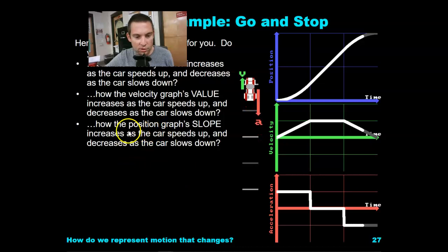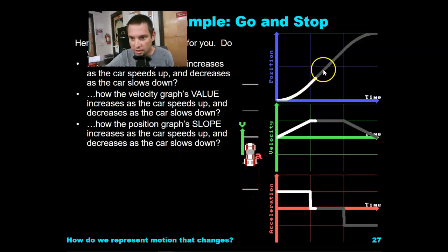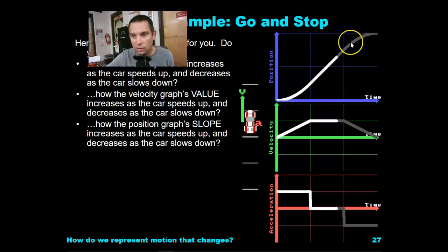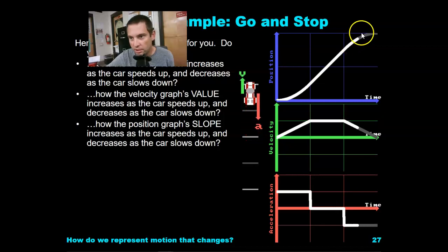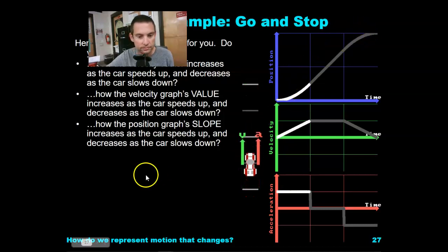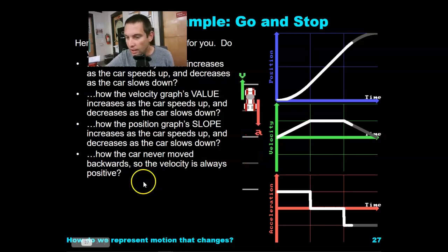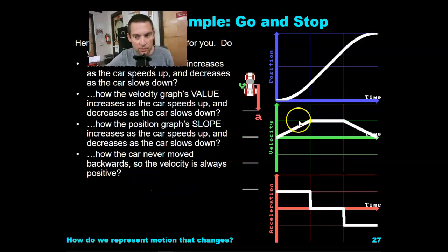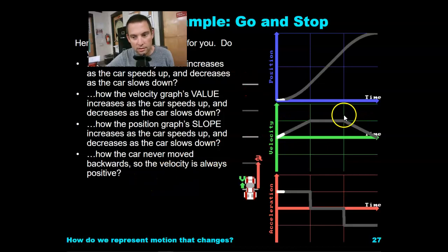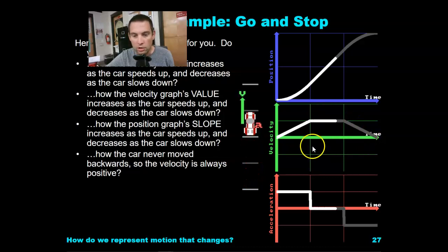Notice how the position graph slope increases as the car speeds up and then decreases as the car slows down. So this is increasing, then constant velocity, and then we're going to be decreasing our slope — our position is not changing as rapidly as it was before. Notice how the car never moved backwards, so the velocity is always positive, even though the velocity is approaching zero.